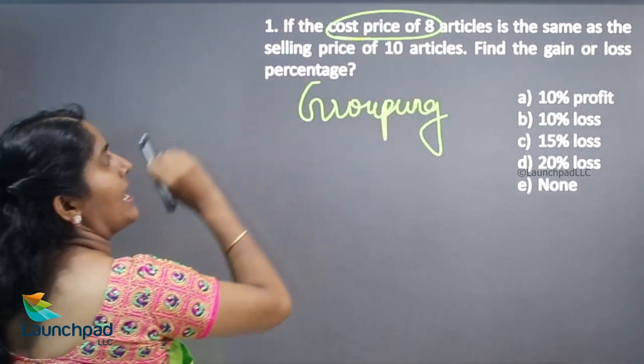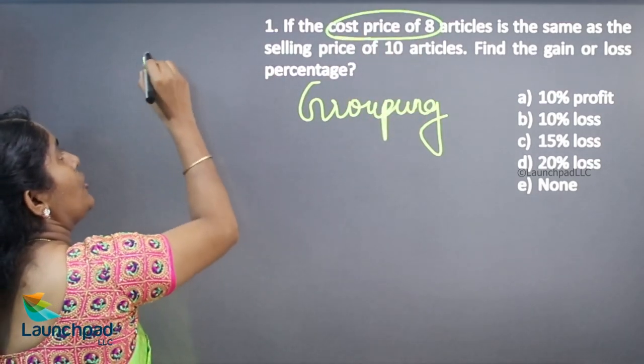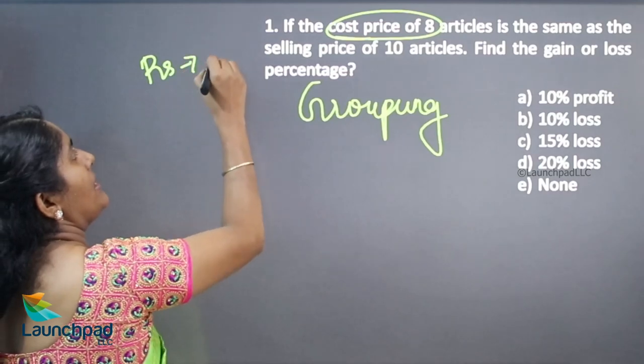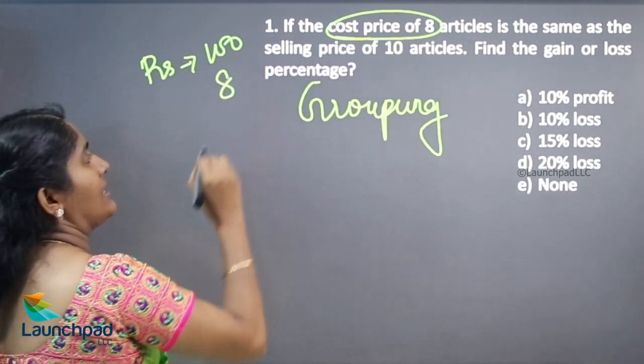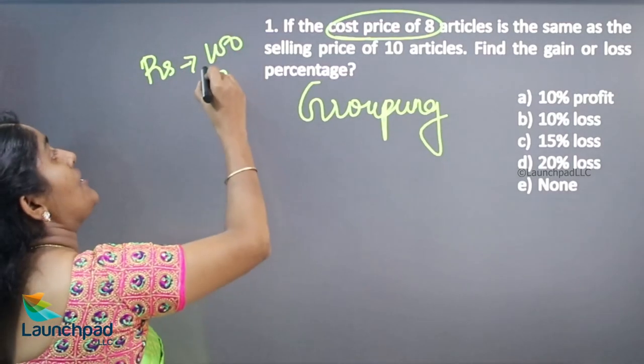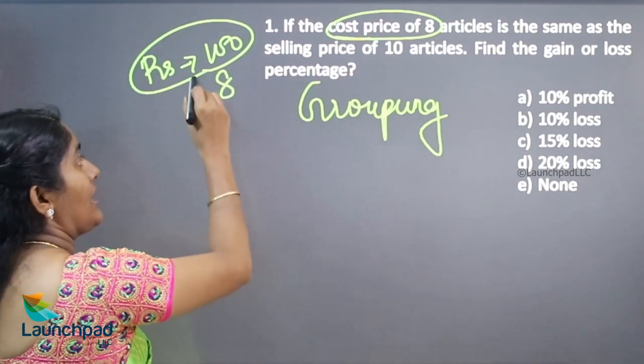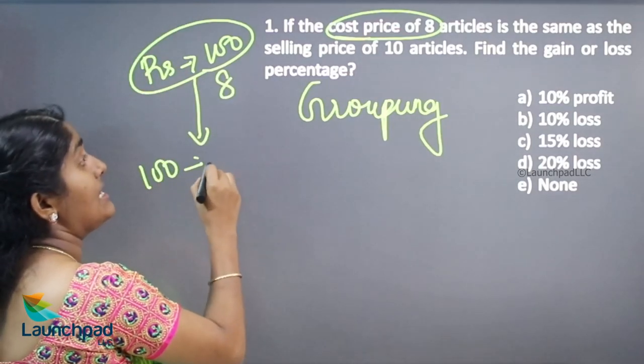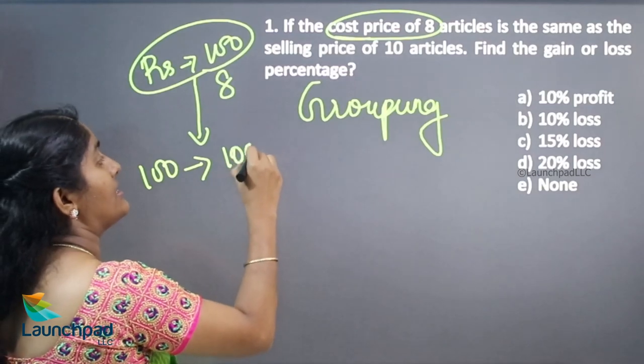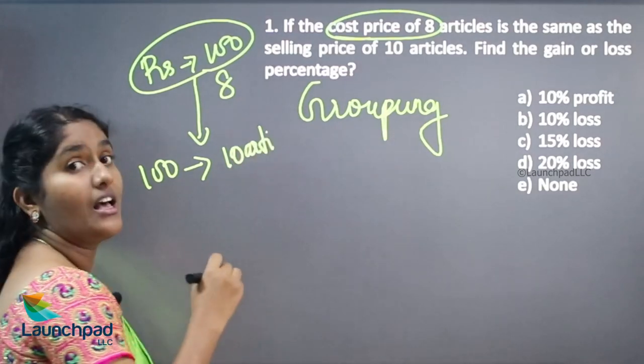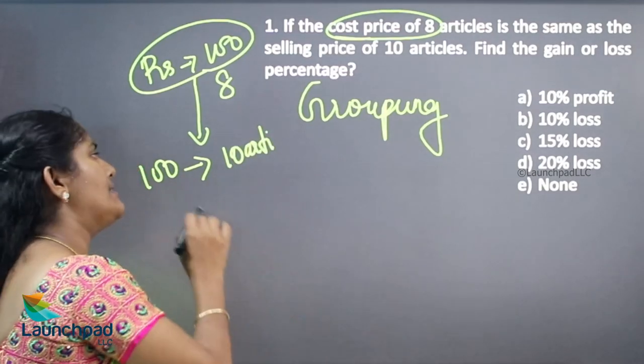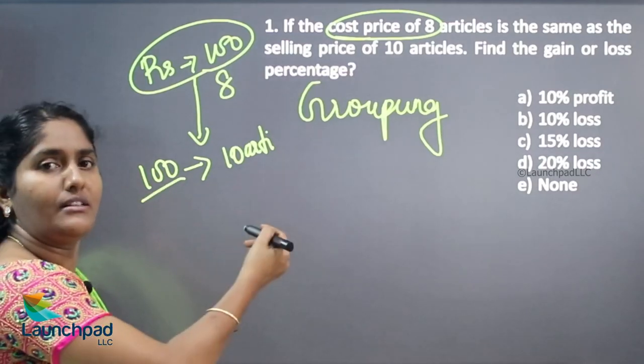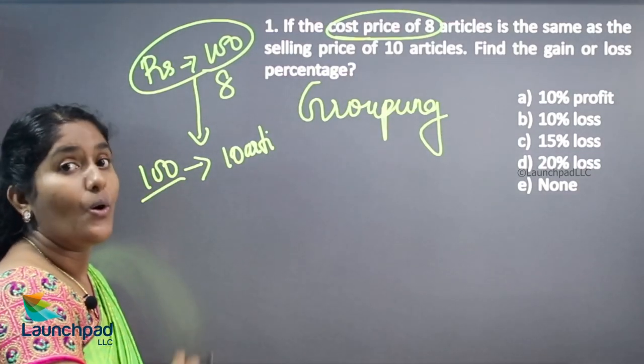Cost price of 8 articles. So if you are spending rupees 100 for buying 8 articles, this 100 rupees you are gaining while you selling 10 articles. 10 number of articles means then only you can get just this 100 rupees written back.